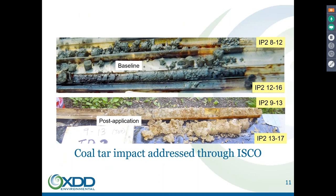This is a site we worked on — a demonstration project for a coal tar site for the Electric Power Research Institute, one of the first demonstrations of persulfate technology. It was actually developed by the University of Connecticut and United Technologies, and we got the opportunity to apply the technology directly from the development stage into a few different sites.